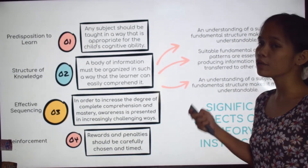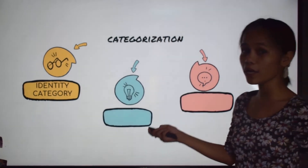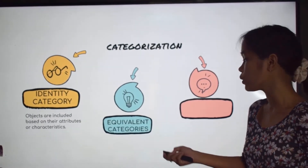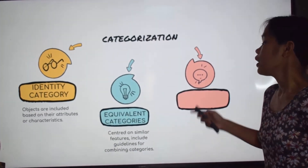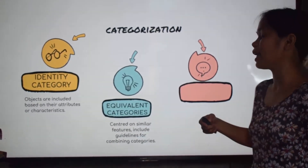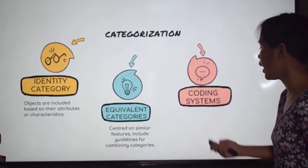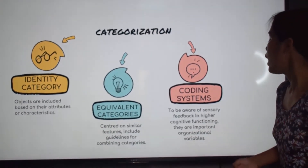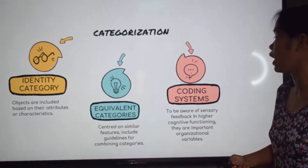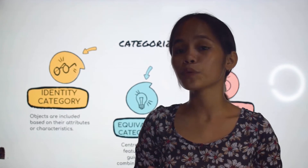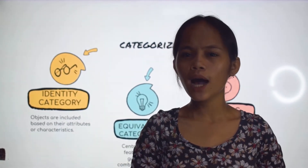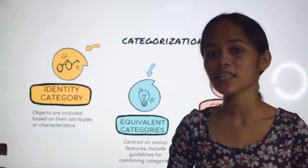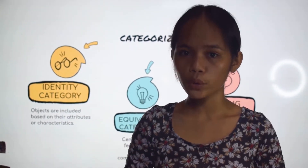Consequently, he made three categories. These are the identity category, where objects are included based on their attributes or characteristics; equivalent categories, which are centered on similar features and include guidelines for combining these categories; and lastly the coding system, where sensory feedback and higher cognitive functioning are important organizational variables. Bruner's ideals gave birth to the idea that people often see the world in terms of similarities and differences, which is a significant contribution to how people make their models or worldviews.